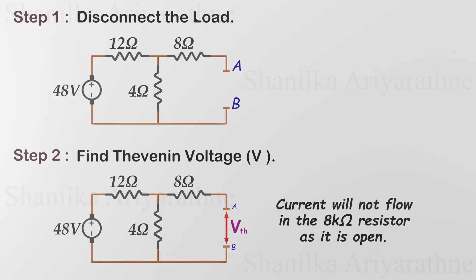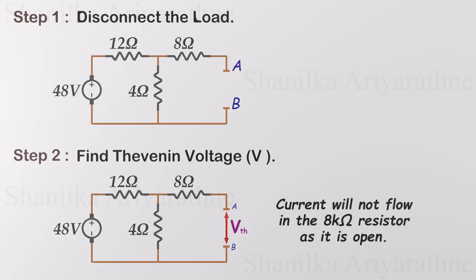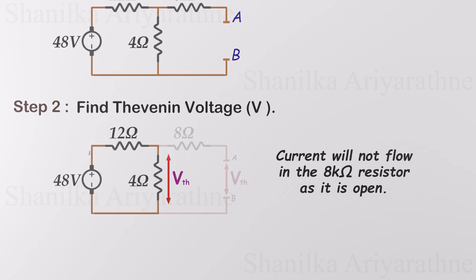Current will not flow in the 8 ohm resistor as it is open. So the voltage across nodes A and B is equal to the voltage across the 4 ohm resistor. Now the circuit just contains one loop. We can solve this using Ohm's law. If we have more than one loop, you may have to use Kirchhoff's laws as well.